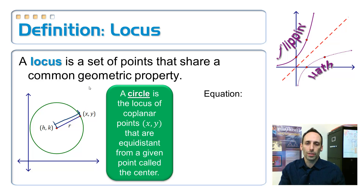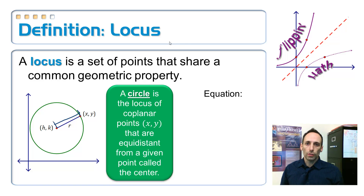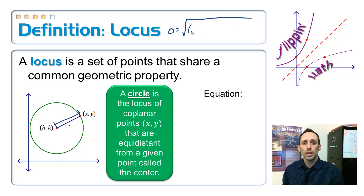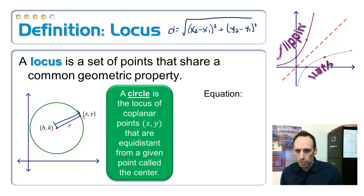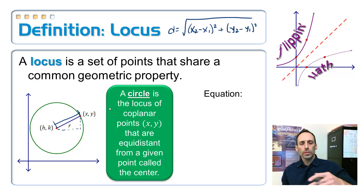How do you find the distance between two points on the coordinate plane? You have to use the distance formula: d equals the square root of (x₂ minus x₁) squared plus (y₂ minus y₁) squared. This comes from the Pythagorean theorem — you're just tracing out a right triangle, a squared plus b squared equals c squared, and you take the square root to get the length of the radius.